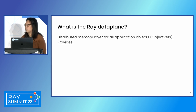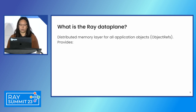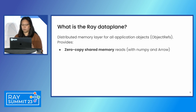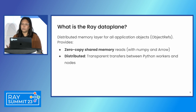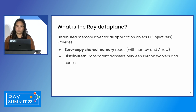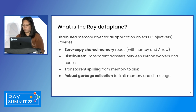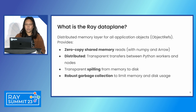When we think of the Ray data plane, it's essentially this distributed memory layer for all application objects created in Ray — basically all the different values you have for Ray object refs. The data plane provides a number of nice features, including shared memory reads with zero copies as long as you're using types like NumPy or Arrow. It's distributed by default, giving transparent transfers between different Python workers both within the same node and across different nodes. It also gives you important memory control features, including transparent spilling between memory and disk and garbage collection.